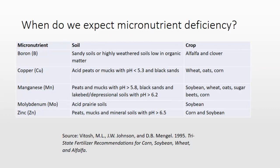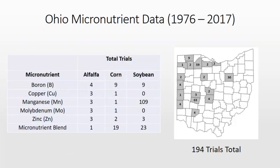But when we do find responses, in many ways they can be predictable. This is a table taken from the tri-states published 25 years ago showing the micronutrients of interest, the conditions where we might see a deficiency, and then the crops that are particularly sensitive in those conditions. This is out there and you're welcome to look it up.